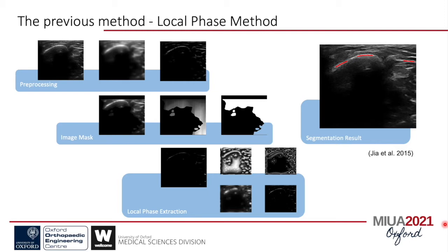The pre-processing step enhances the edge of the bone, and the masking step removes areas less likely to contain bones. Finally, the local phase extraction uses inverse fast Fourier transform to categorize local features, which ensures quality. However, this calculation is rather time-consuming, and this bottleneck is shared with other researchers working in similar fields.